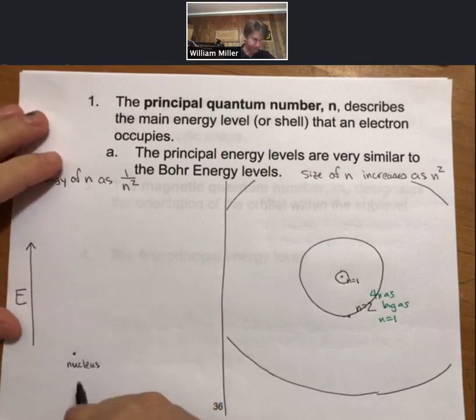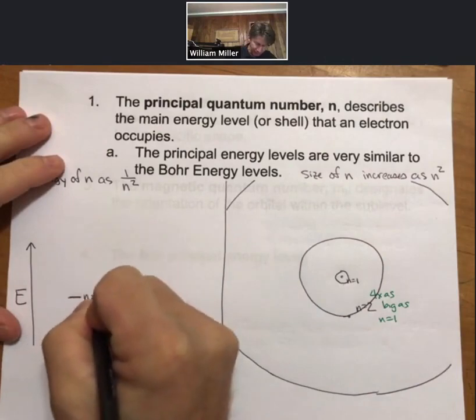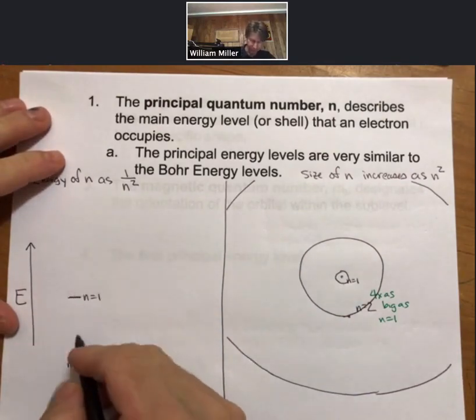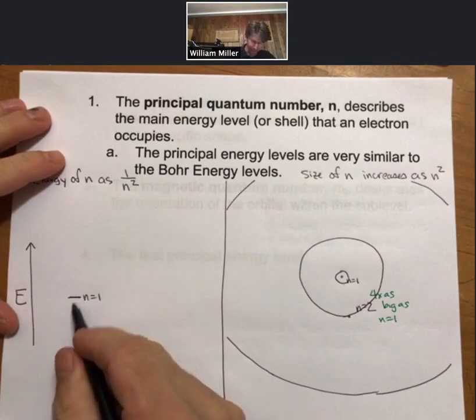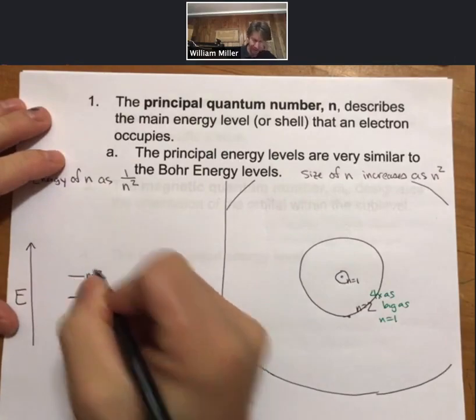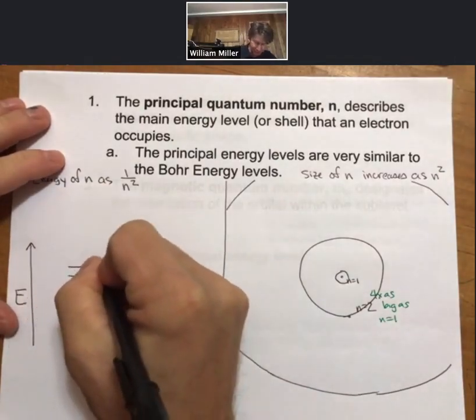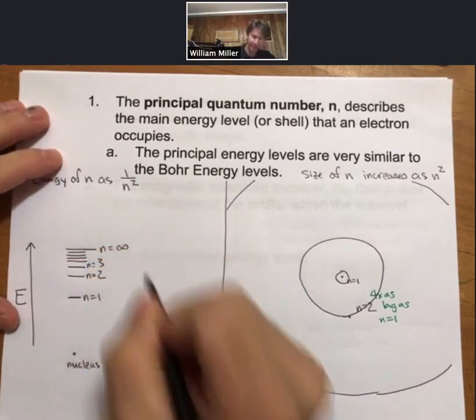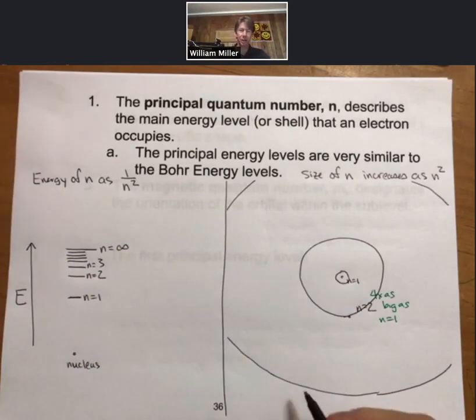It's going to be one fourth as far away as here. So let's divide it into four, approximately there. And then it gets one ninth as far. And then it keeps going until somewhere up here you get n equals infinity. And all of these values are valid values of n. So n equals one all the way through n equals infinity are valid values. So the Schrödinger equation and the principal quantum numbers that come out of the Schrödinger equation and the psi functions, the wave functions, says there's no limit all the way out to n equals infinity.